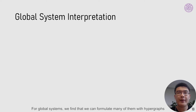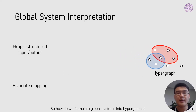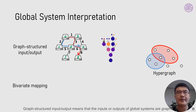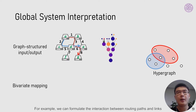For global systems, we find that many can be formulated with hypergraphs. In a traditional graph, an edge connects two vertices; in a hypergraph, a hyperedge can cover multiple vertices. We find two outstanding features of global systems: graph-structured input-output and bivariate mapping. Graph-structured input-output means the inputs or outputs are graphs, such as network topology. We can formulate the interaction between routing paths and links as the relationship between hyperedges and vertices.